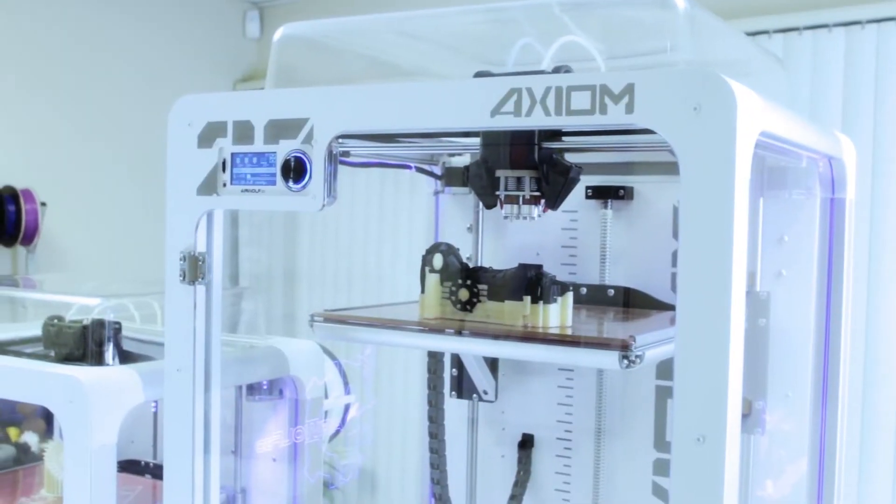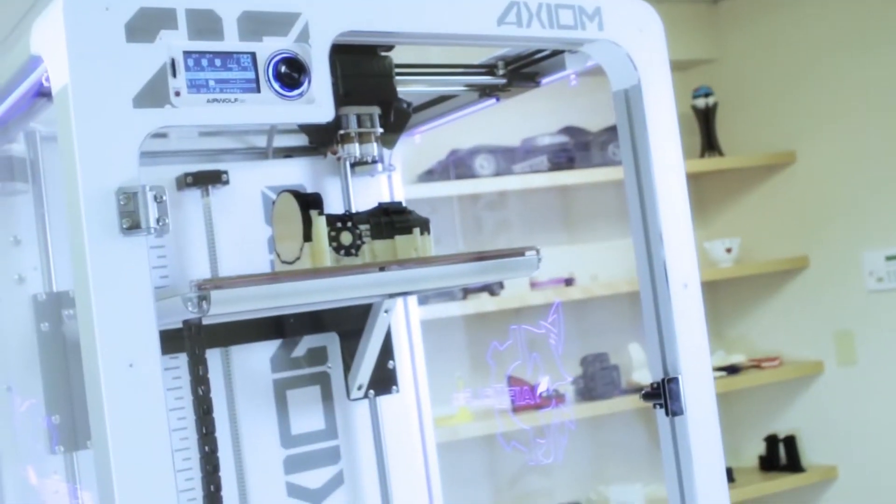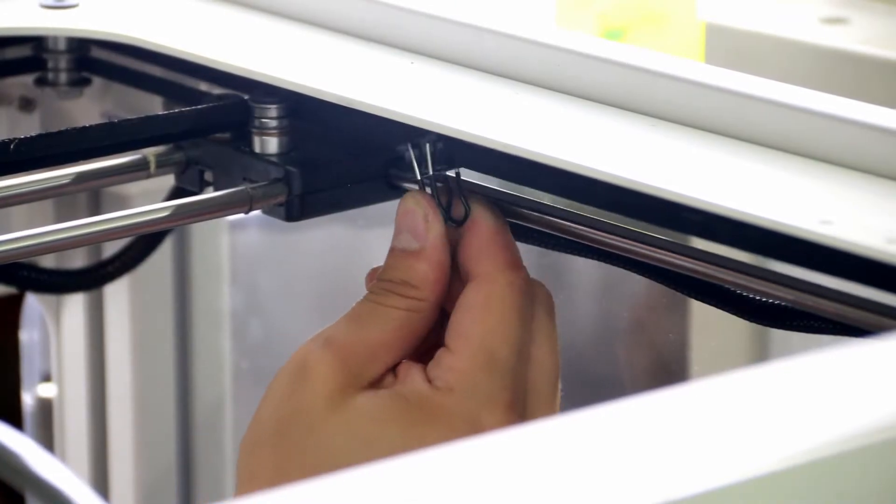In this video, I will be showing you how to replace the Axiom 20 belt tensioners. First, clamp the belts together.